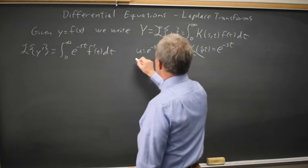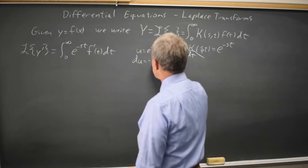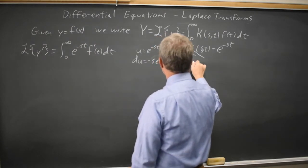du is negative s, e to the negative st, and v equals f of t.